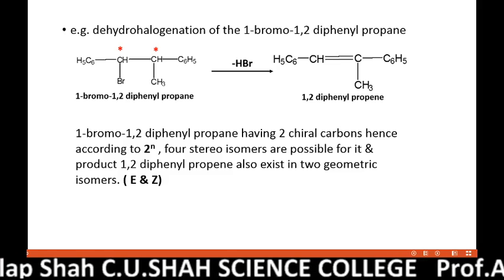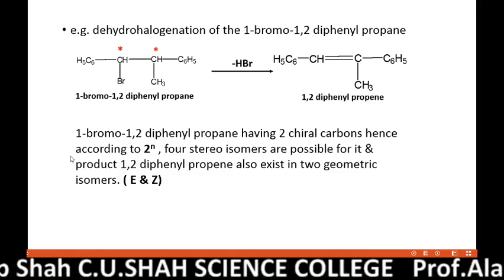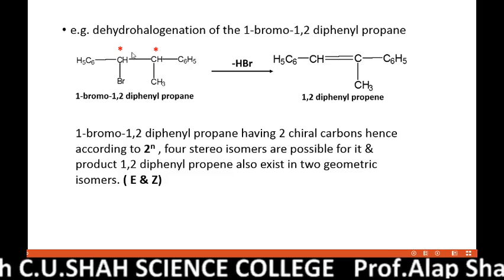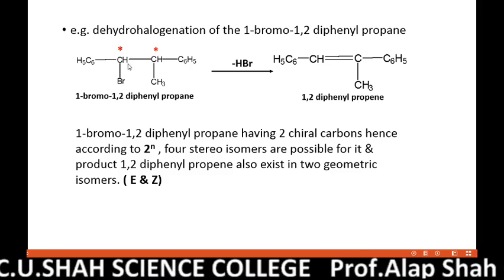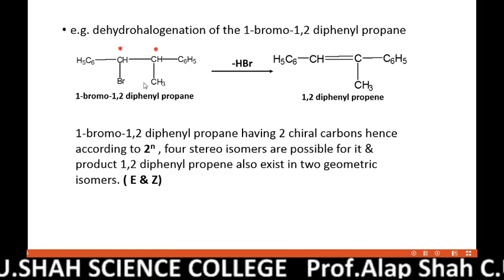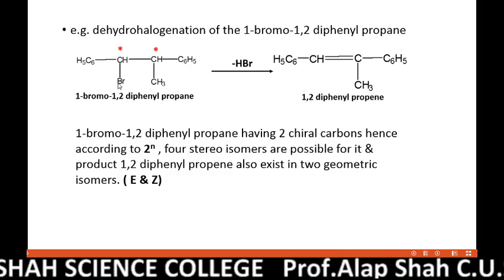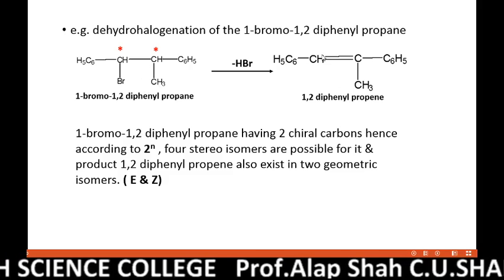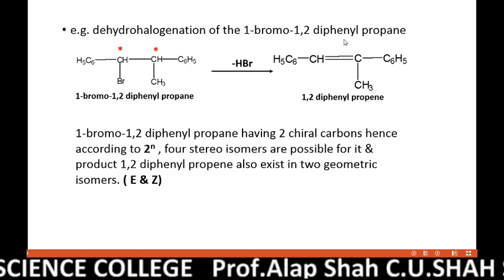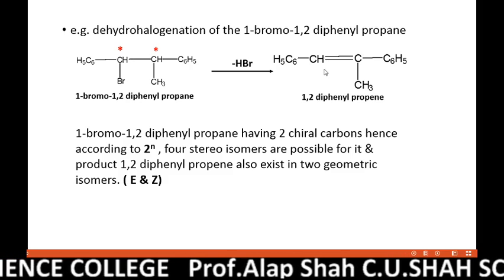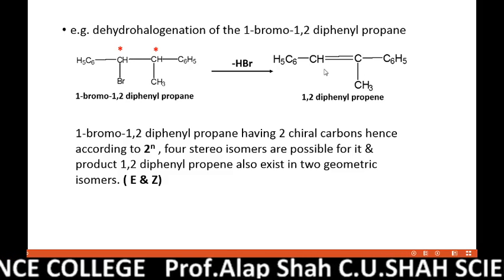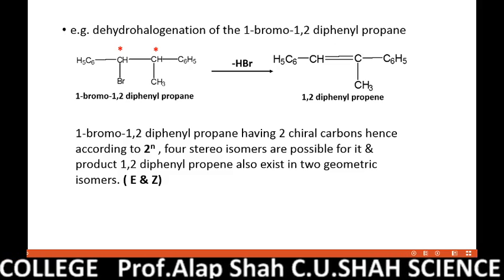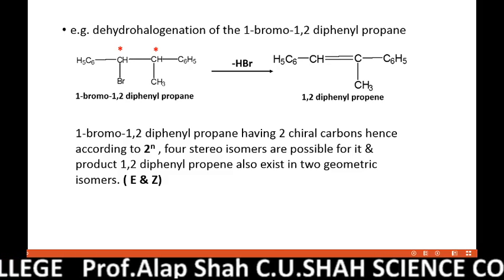The reactant has 2 asymmetric carbons. As per the 2^n formula, 4 isomers are possible for it. The product is also a geometric isomer, so 2 isomers are possible for it — the E isomer (Entgegen) and the Z isomer (Zusammen).